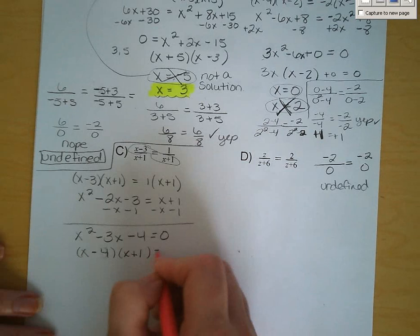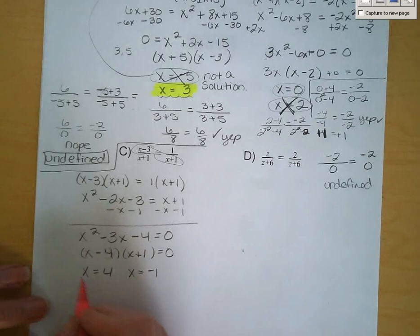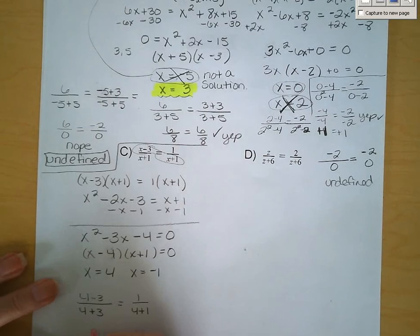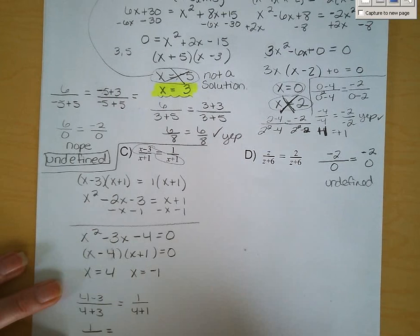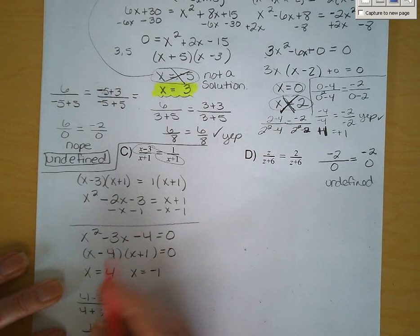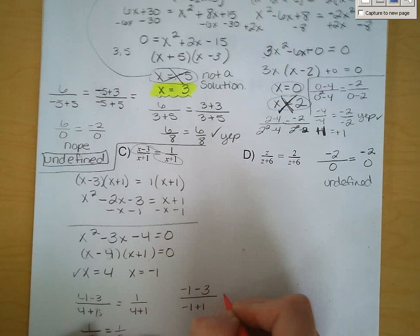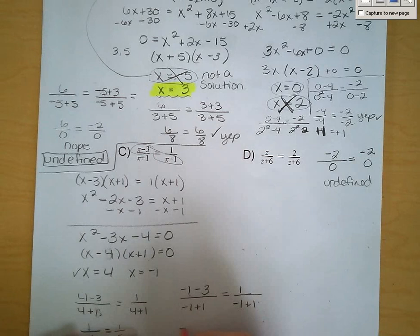Let's check which ones are valid and which are extraneous. For x equals 4: 4 minus 3 over 4 plus 1 equals 1 over 4 plus 1, giving us 1 over 5 equals 1 over 5 — that is a solution. Now try x equals negative 1: negative 1 minus 3 over negative 1 plus 1 equals 1 over 0. We get negative 4 over 0, which is undefined — cannot divide by 0, so negative 1 is an extraneous solution.